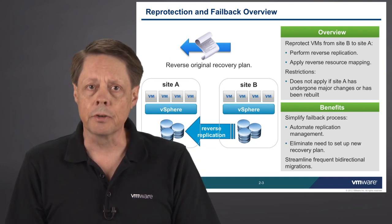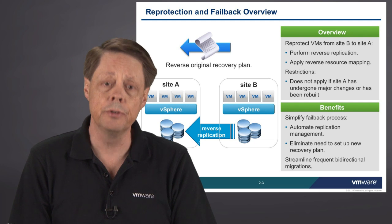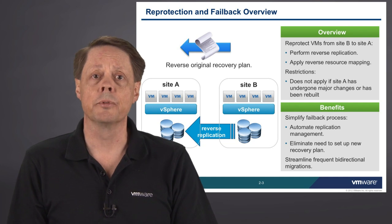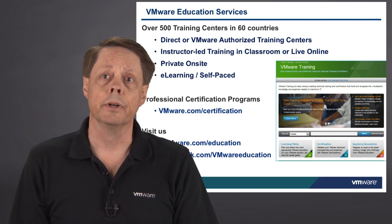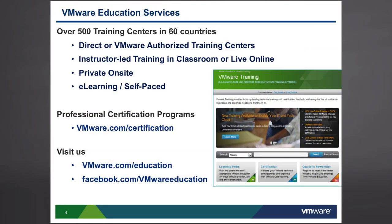If you have the ability to do the re-protection because it wasn't a catastrophic failure — it was like a service interruption type process and you did choose to fail over — then the one-button re-protect and subsequently one-button fail back would be an option for you. That brings us to the end of our video series on SRM 5. If you'd like more information, go to vmware.com/education to look for the SRM 5 Install Configure Manage class, or visit vmware.com to look at all of the other products that help manage and automate your data center.